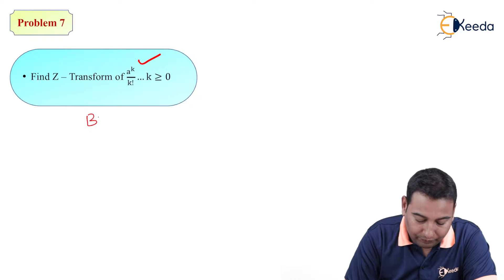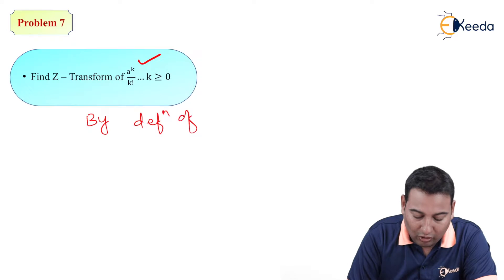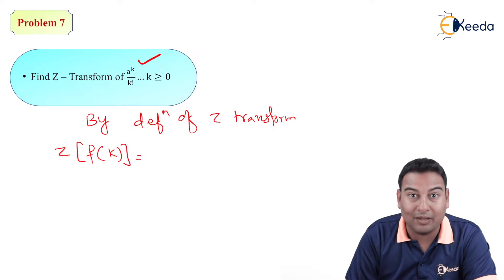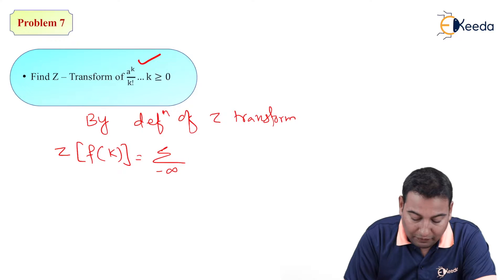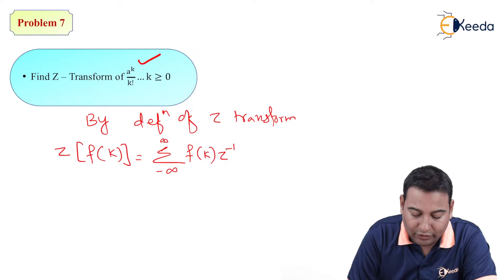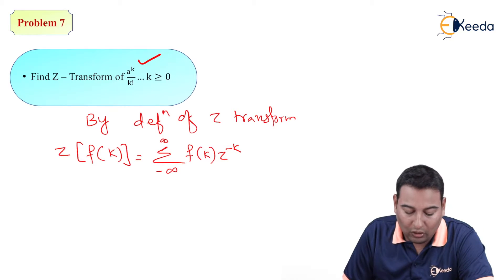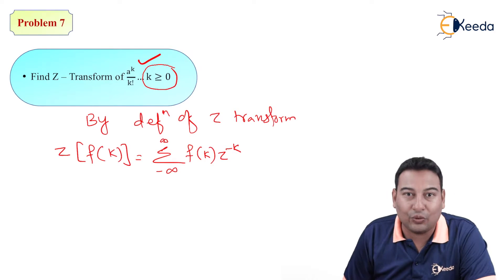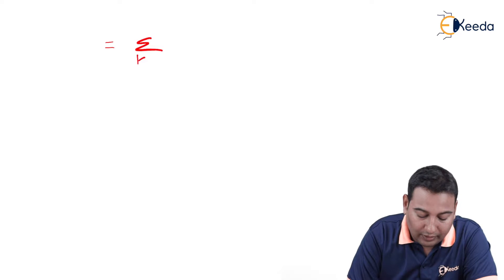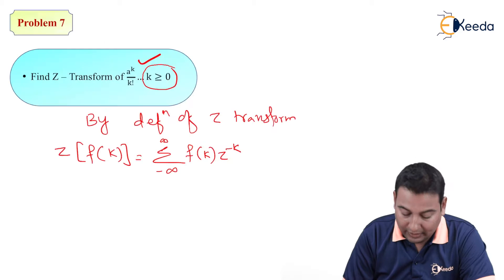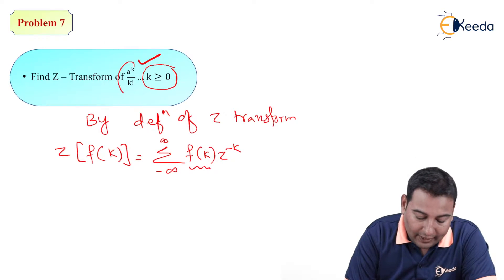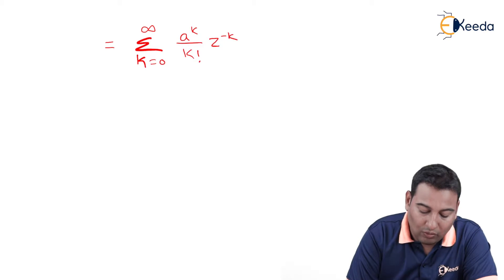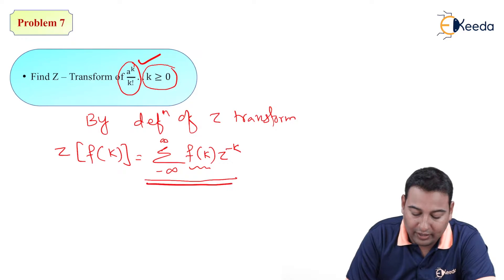Let's start by the definition of Z-transform: Z{f(k)} is equal to summation from minus infinity to infinity of f(k) into z^(-k). Here in this problem k is greater than or equal to zero, so we take the summation from k=0 to infinity, and f(k) is a^k upon k factorial, multiplied by z^(-k). We substitute it in this formula.